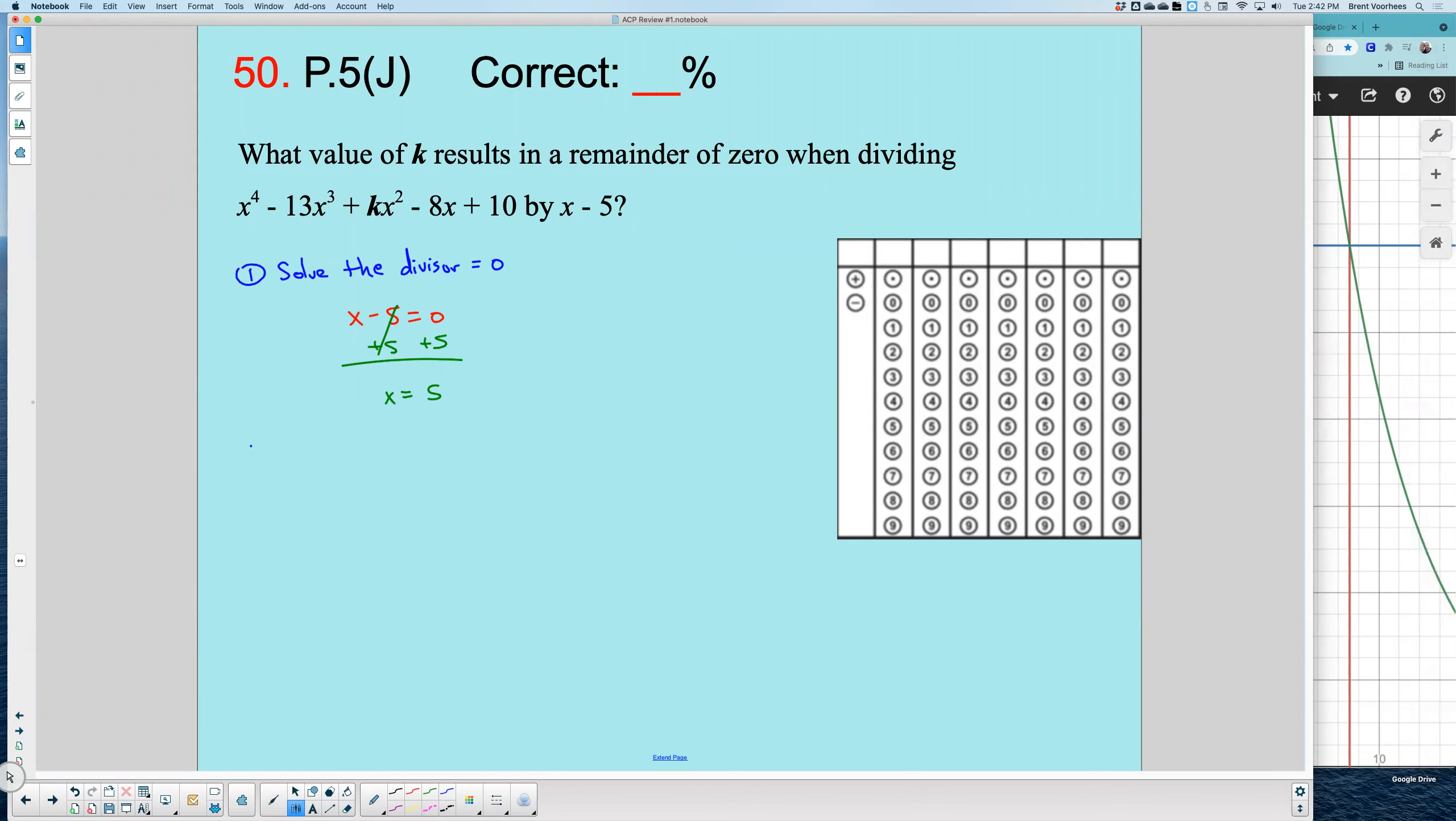Now, once you do that, we write out our coefficients of what we're going to be dividing, the original function here.